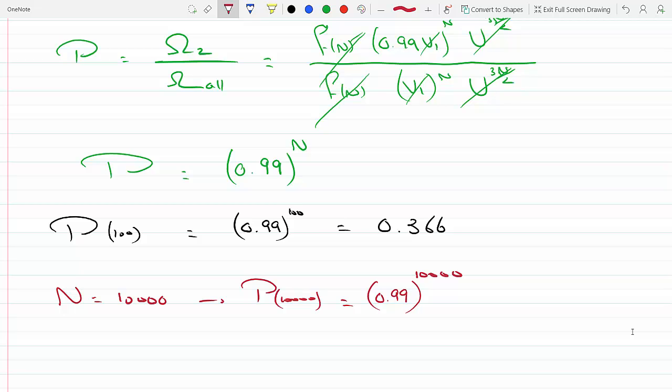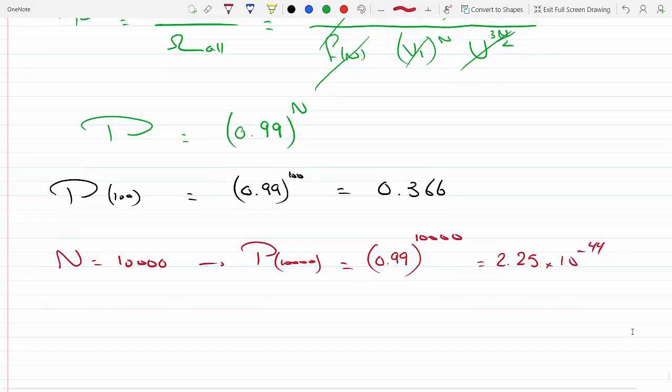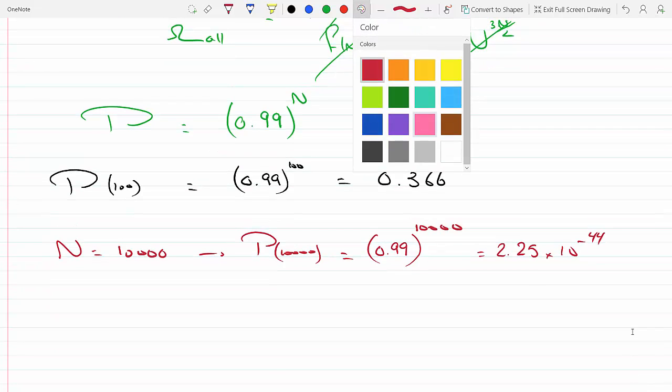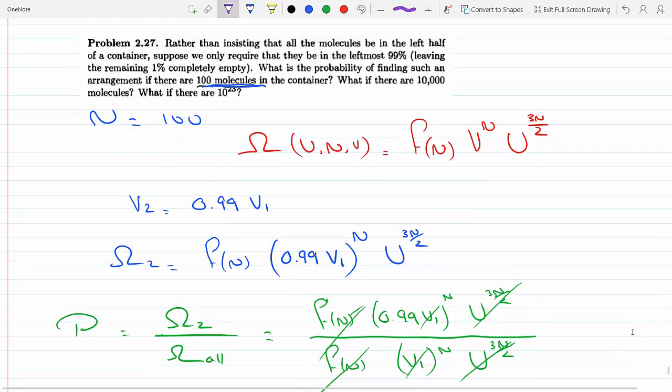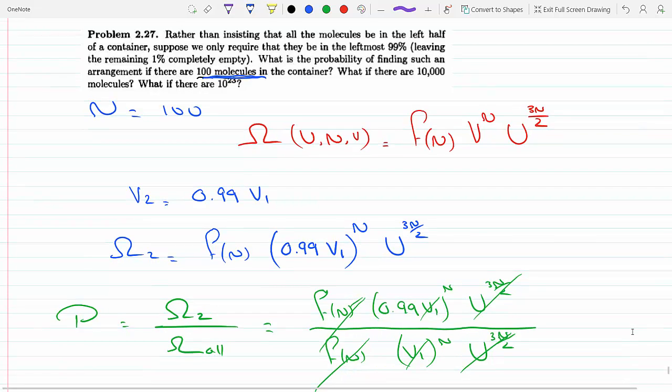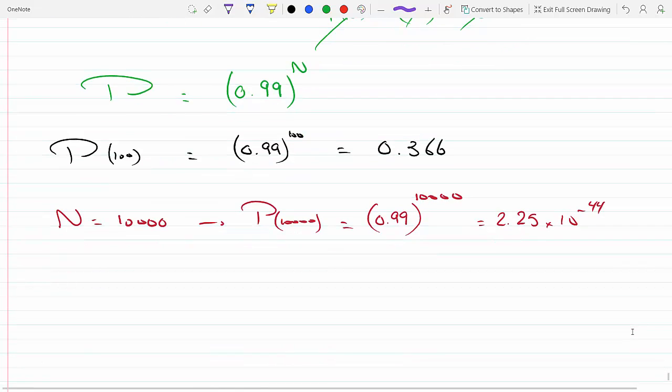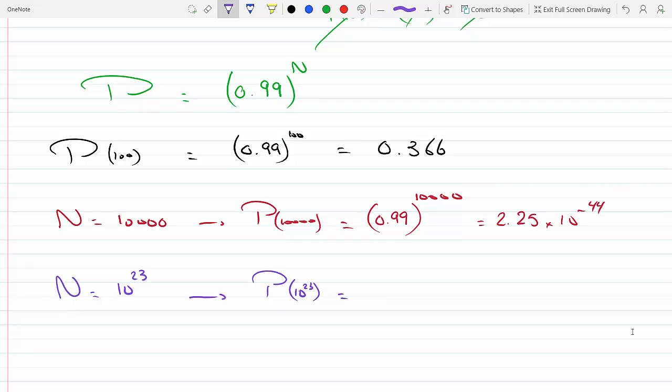2.25 times 10 to the minus 44. And if N - the last part - it says if we have 10 to the 23 molecules, then P of 10 to the 23 being in 99 percent of the volume will be...